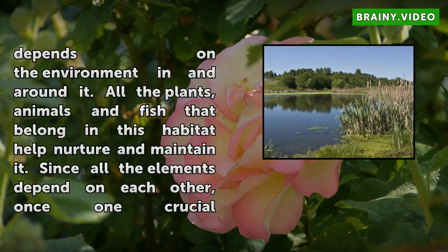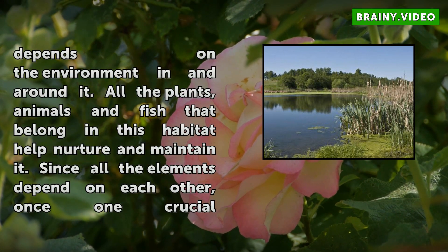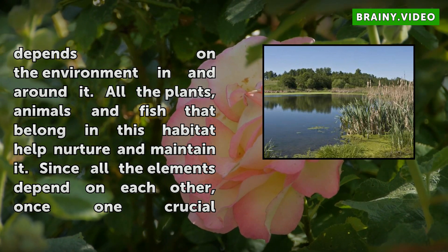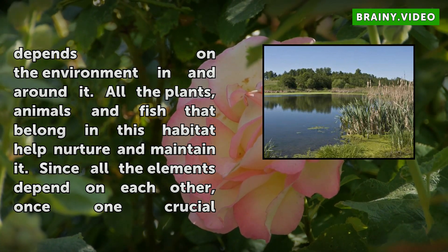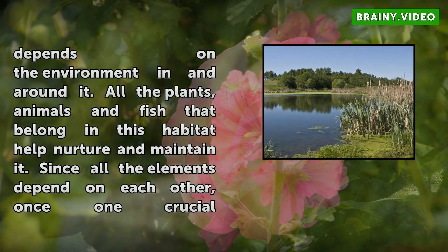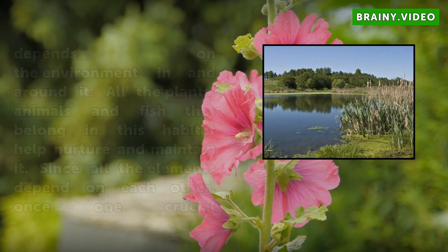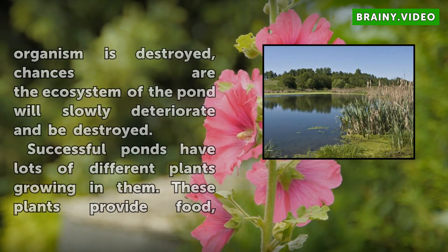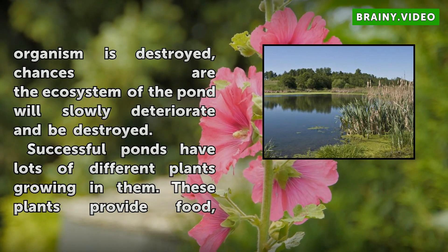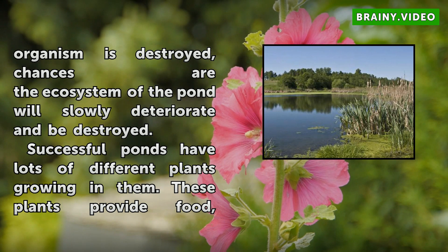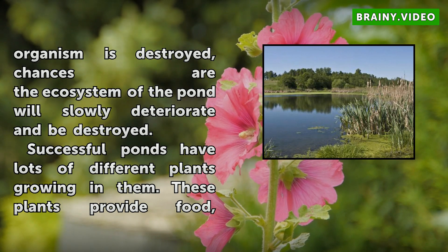All the plants, animals and fish that belong in this habitat help nurture and maintain it. Since all the elements depend on each other, once one crucial organism is destroyed, chances are the ecosystem of the pond will slowly deteriorate and be destroyed.